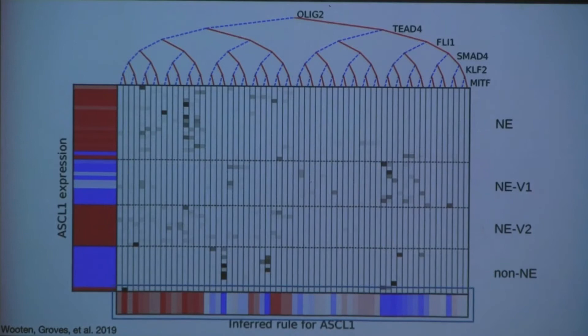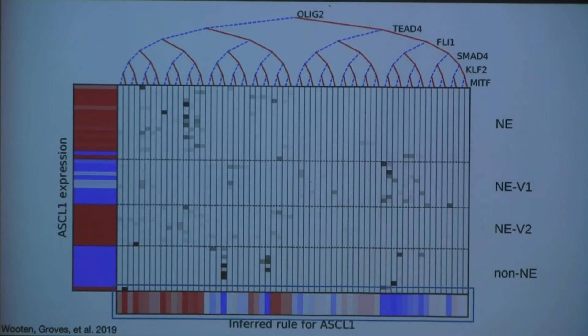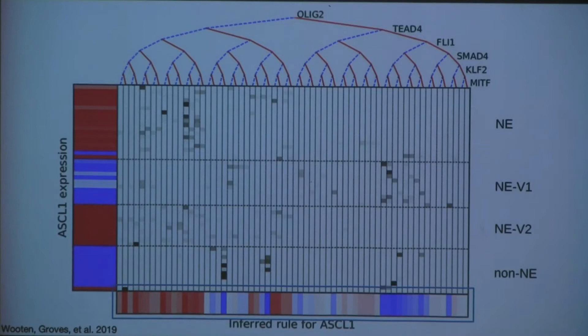The values in the rules are all between 0 and 1 — probabilities rather than binary. When simulating, we use the probability in the inferred rule to flip a biased coin: if the inferred rule is 0.8, there's an 80% chance of turning the gene on. This contrasts with normal Boolean rules where values are strictly 0 or 1 and the outcome is deterministic.